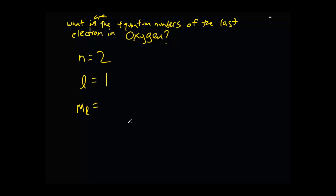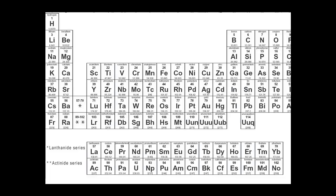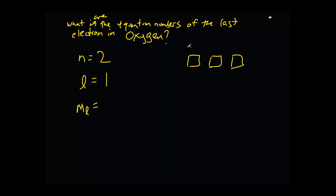For the third quantum number, we need to determine, well, which P is the last one in. Let's see. If it's 2P4, and we know that the four electrons need to be filled like this, then the ML quantum number has to be negative 1.